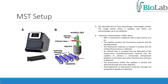This is the overall setup of the MST optics. MST is measured in capillaries with a total volume of 4 µL. The capillary contains the fluorescent molecule and the binding partner. The fluorescent molecule in solution is excited and the emitted fluorescence is collected. An infrared laser coupled into the light path of the fluorescent excitation emission is focused into the capillary to produce a microscopic temperature gradient on the exact spot where fluorescence emission is detected.